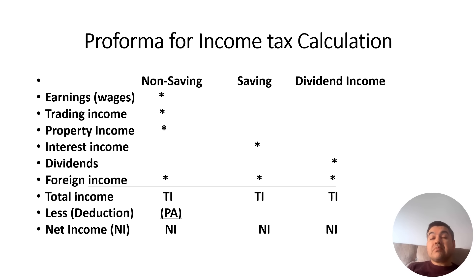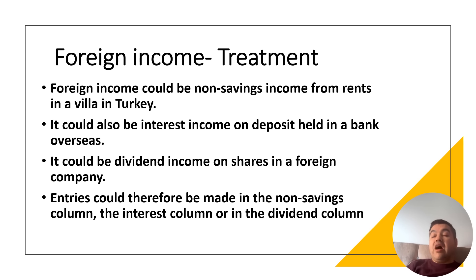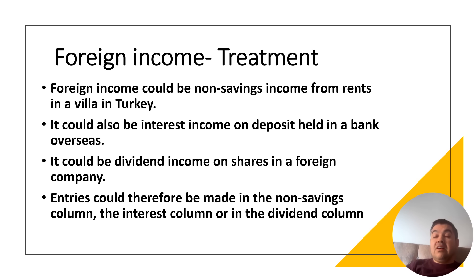Foreign income could be in the form of rent from a property abroad, interest income on a deposit held in a bank overseas, or dividend income on shares in a foreign company. The entry should therefore be made in the non-saving column, the interest/saving column, or the dividend column — for example, if it's non-saving income put it in the non-saving column, if it's interest income put it in the saving column, and if it's dividend income place it in the dividend column.